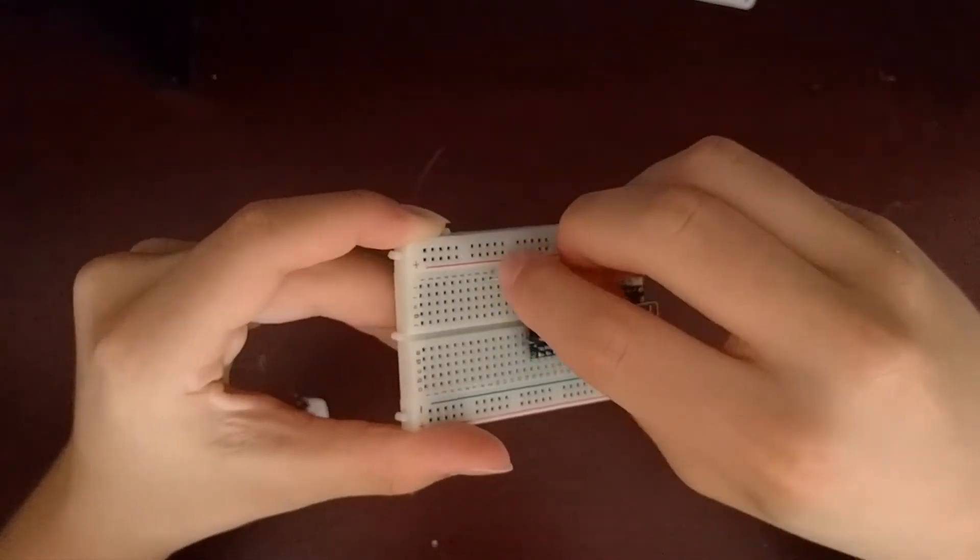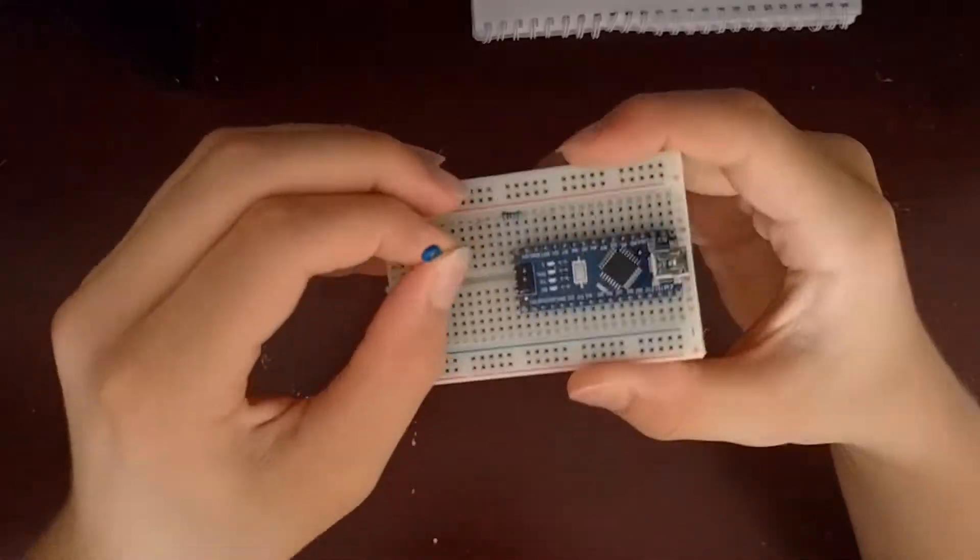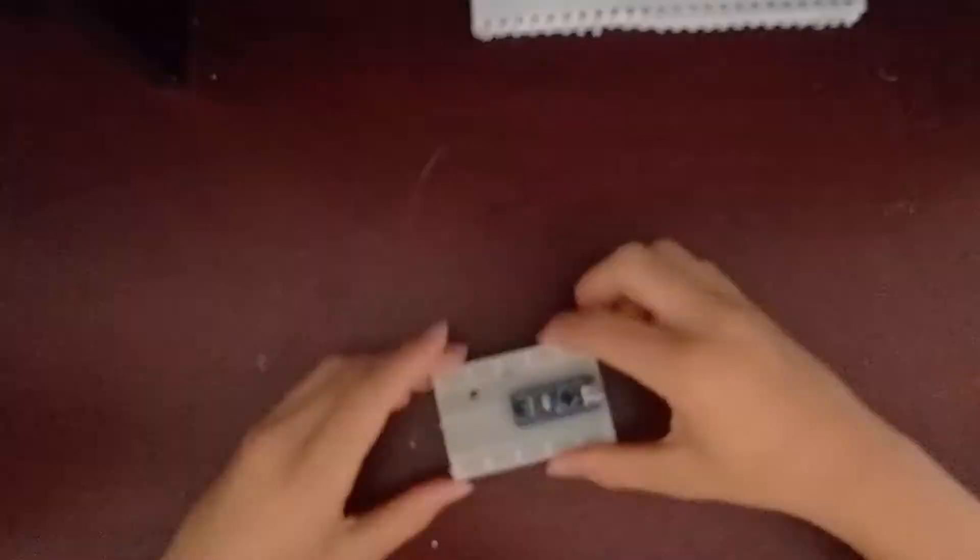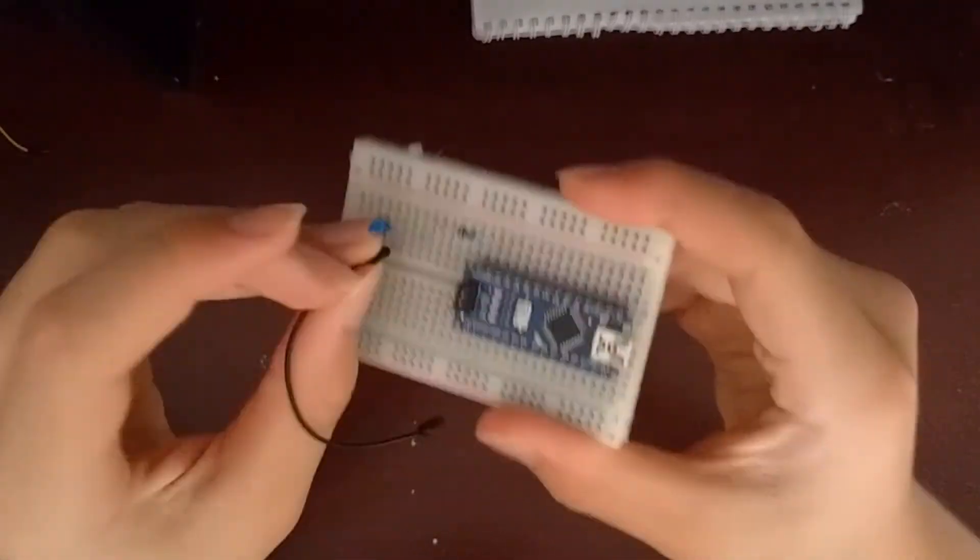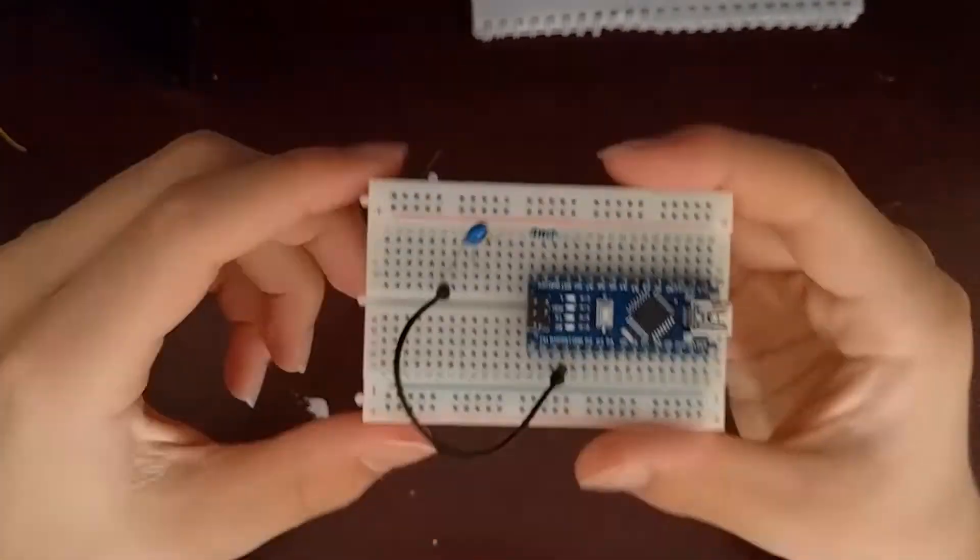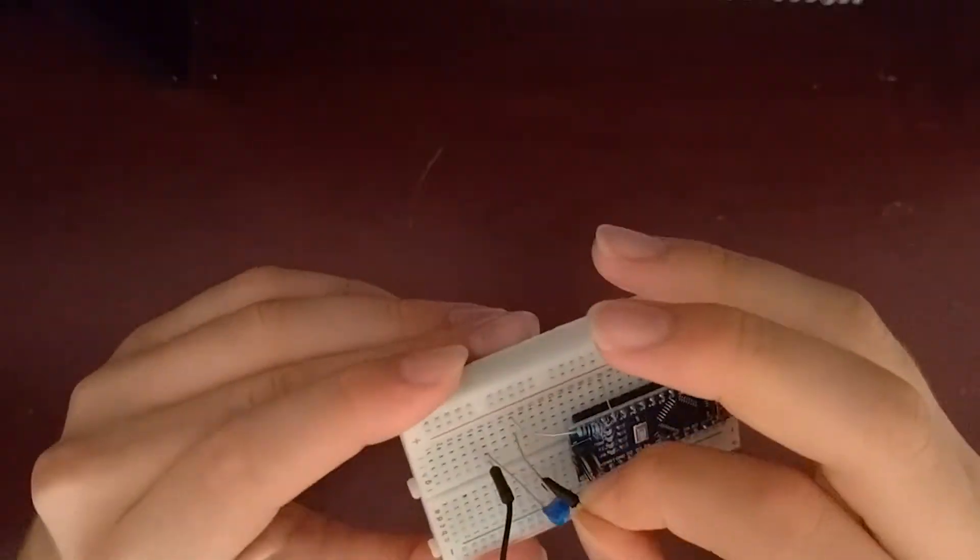Then connect the thermistor in series and connect a wire back to Arduino ground.